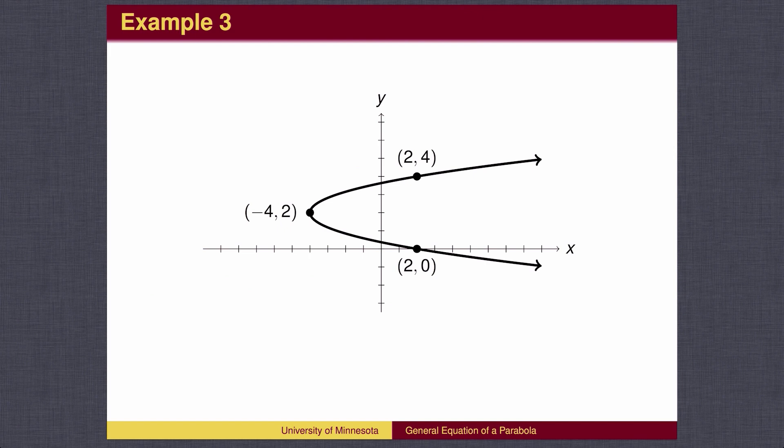Here is an example. This is a horizontal parabola, so the standard form is x equals y squared. It opens to the right, so it is positive y squared. The vertex is at (-4, 2), so h is -4 and k is 2.